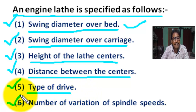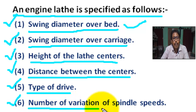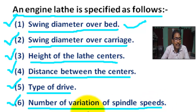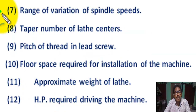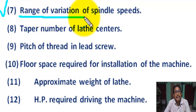Number six: number of variations of spindle speed. It should also be indicated whether the lathe is of four feet, six feet, nine feet, etc. Number seven: range of variation of spindle speed.